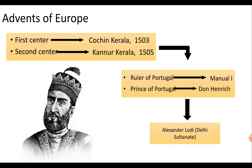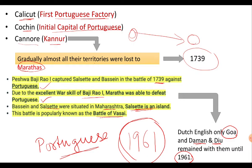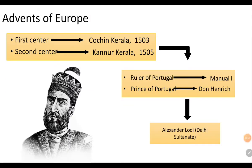To clarify, the first Portuguese factory was at Calicut, which was also the first trading center. The first advance center was Cochin in Kerala, established in 1503, and the second was Kanur in Kerala, established in 1505. The ruler of Portugal at the time was Manuel I, and the Prince of Portugal was Don Henry. In India, it was the time of the Delhi Sultanate, and Sikandar Lodi was ruling.